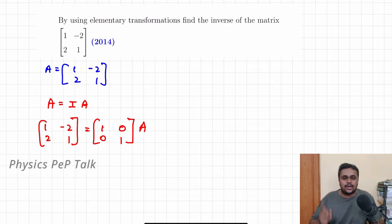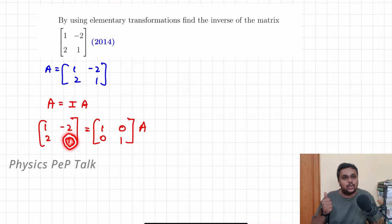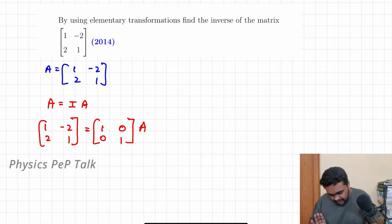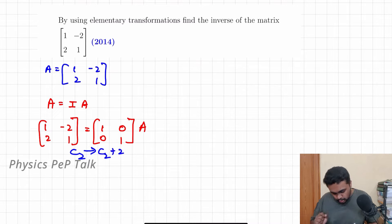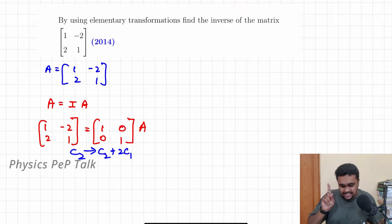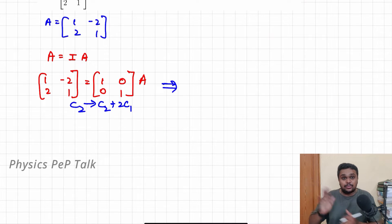We will start the transformation. The first step is to make this element equal to 0. Second step, I will make this element equal to 1. Third step, I will make this element equal to 0. So in this step, I will start to transform column 2: C2 plus 2 times C1. This is minus 2 plus 2 into 1, which becomes plus 2. Minus 2 plus 2 becomes 0.